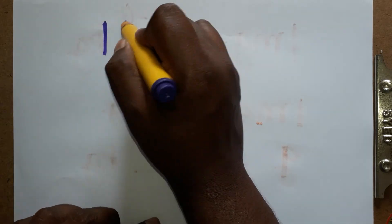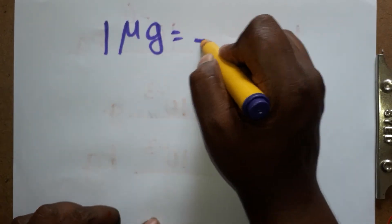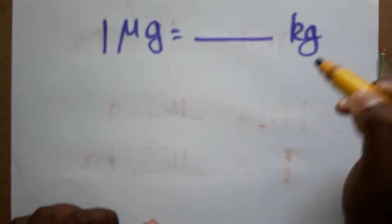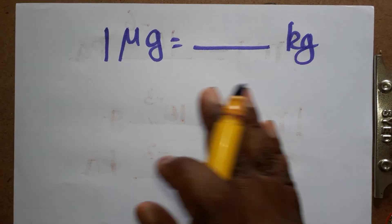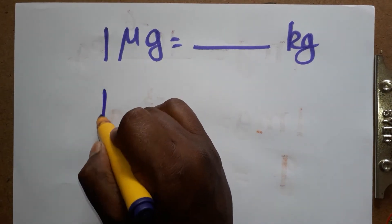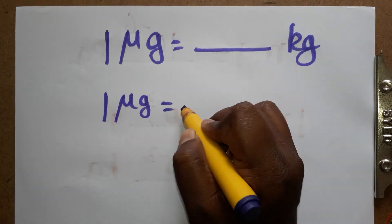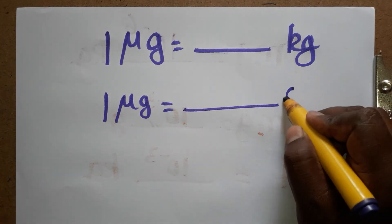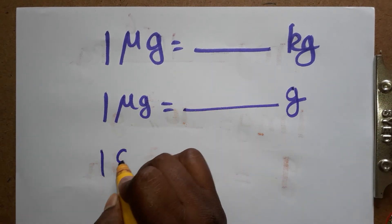Hello students, today we are going to see: one microgram is equal to how many kilograms. First, we need to learn one microgram is equal to how many grams, and one gram is equal to how many kilograms.